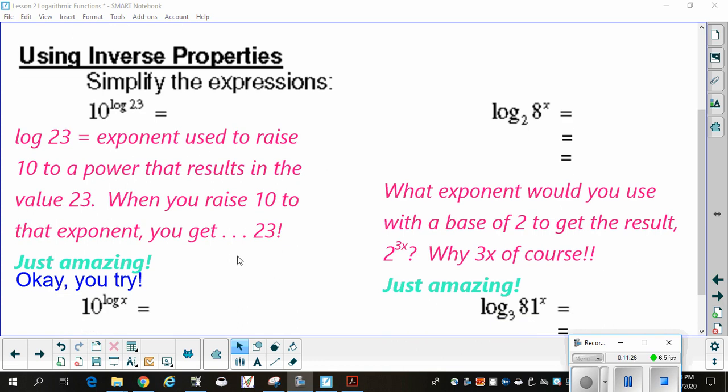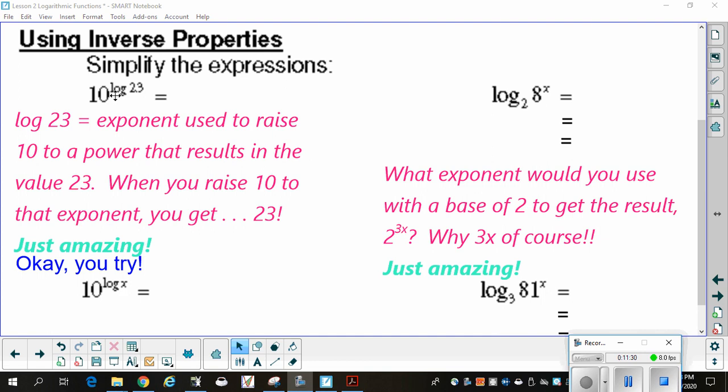Now, let's look down here, and we're going to try a couple of these. 10 raised to the log 23 is equal to 23. How do I know that? Because I've got an exponential and a log. One does, one undoes. Log 23 equals the exponent used to raise 10 to a power that results in the value 23. So, this right here is going to be an exponent that when I put it on 10, we'll get 23. Well, I don't know what that exponent is, but I just put it on 10, so I'm going to get 23. Over here, this one we can break down a little bit more and say I've got log base 2 of 8 to the x. I've got log base 2 of 2 cubed. Log base 2 of 2 to the 3x. These two cancel each other. I've got a log and an exponential using the same bases, so they cancel.